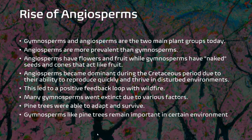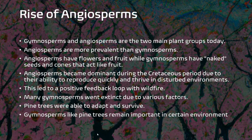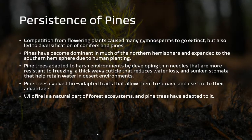Gymnosperms and angiosperms are the two main plant groups today, with angiosperms being more prevalent. The main difference between them is that angiosperms have flowers and fruit, while gymnosperms have naked seeds and cones that act like fruit. Angiosperms became dominant during the Cretaceous period due to their ability to reproduce quickly and thrive in disturbed environments, leading to a positive feedback loop with wildfire. Other factors led to the extinction of many gymnosperms, but some gymnosperms like pine trees were able to adapt and survive. Today, while angiosperms are dominant, gymnosperms remain important in certain environments. The competition from flowering plants caused many gymnosperm species to go extinct, but it also led to the diversification and radiation of conifers and pines, which have become the dominant tree species in much of the northern hemisphere.